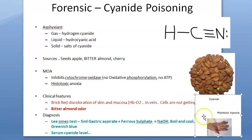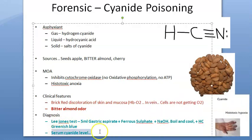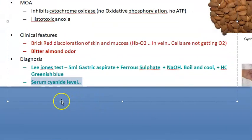There are some tests to check cyanide poisoning: the Lee Jones test, and you can check the serum cyanide level. This is what we will write in the exam — serum cyanide level you can check.